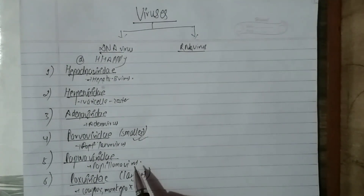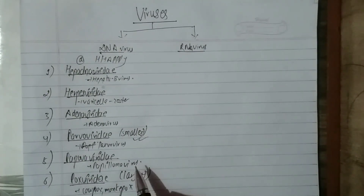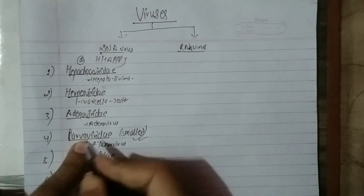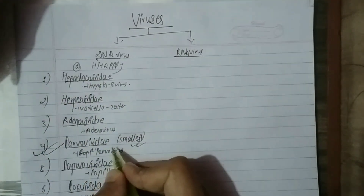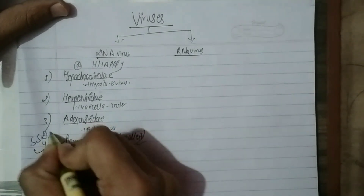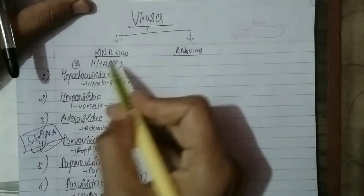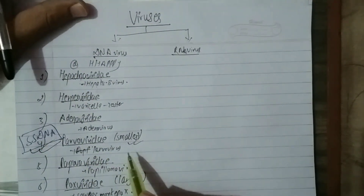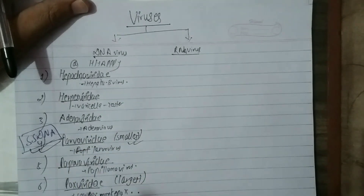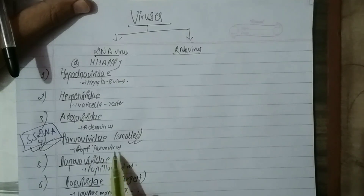DNA virus: most DNA viruses are double-stranded. Single-stranded DNA viruses are the exception. The single-stranded DNA virus family — with example — is Parvoviridae, which is the Parvo virus.